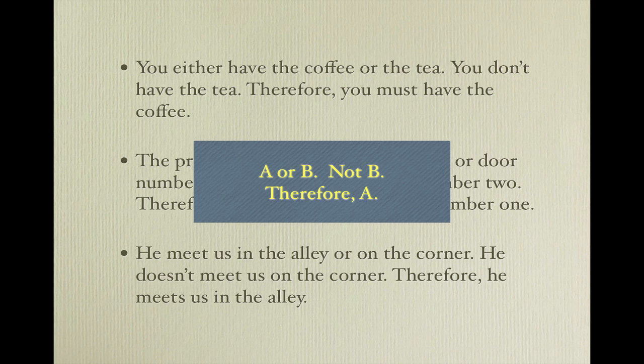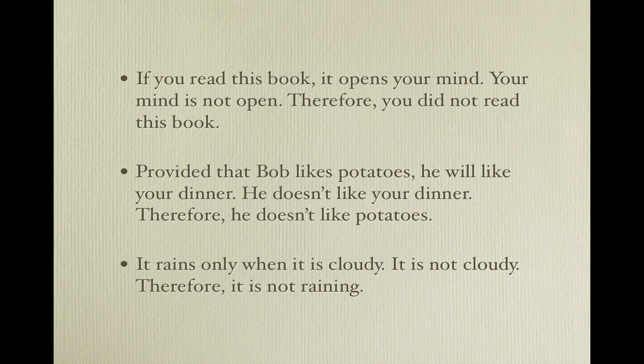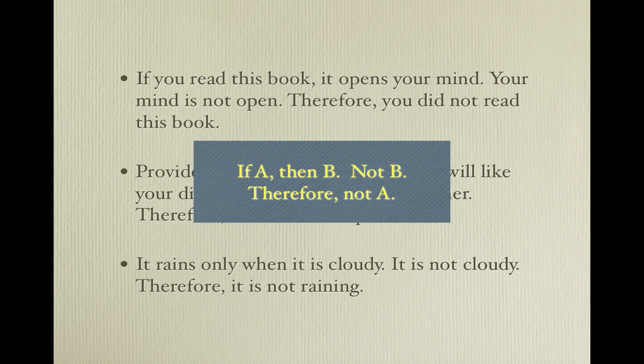Here is a slightly more challenging set of arguments. Try to determine the argument form. If you read this book, it opens your mind. Your mind is not open, therefore you did not read this book. Provided that Bob likes potatoes, he will like your dinner. He doesn't like your dinner, therefore he doesn't like potatoes. It only rains when it is cloudy; it is not cloudy, therefore it is not raining. The argument form is: If A, then B; not B; therefore not A. So: if you read this book (A), it opens your mind (B). Your mind is not open (not B), therefore you did not read this book (not A).